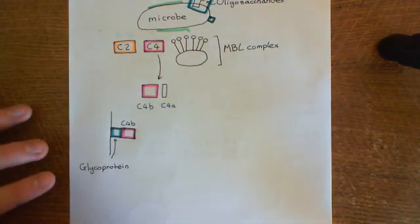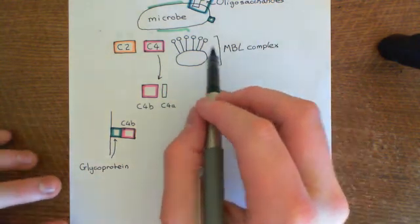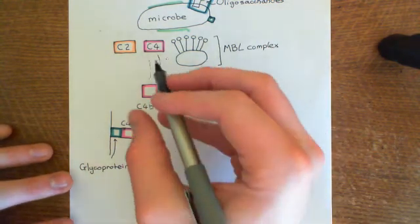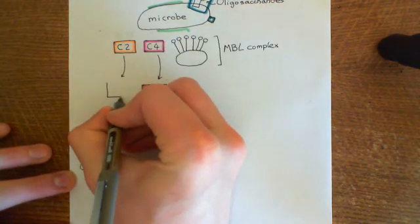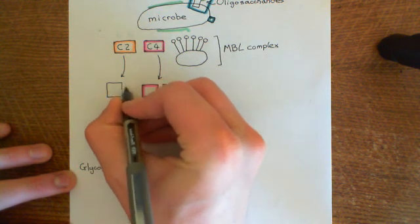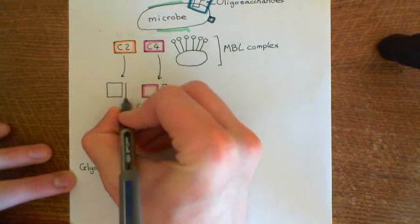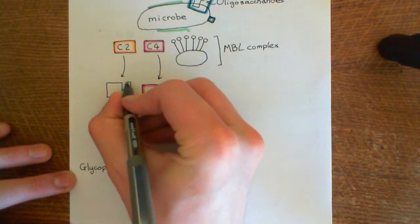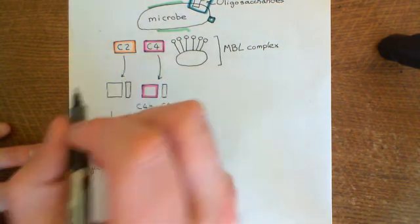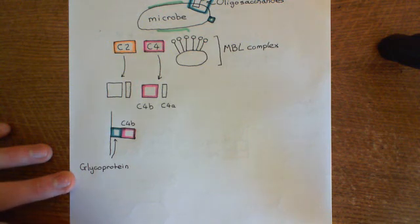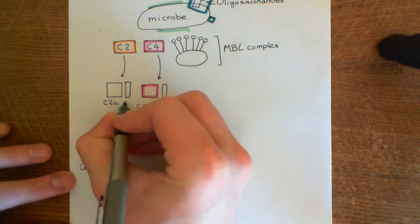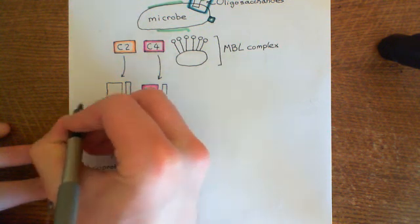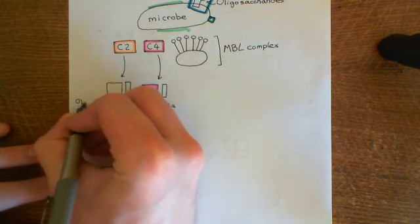Now the mannose-binding lectin complex didn't just break down C4 — it also broke down C2. Again it breaks it down into a big fragment and a small fragment. And here's where I have to tell you something horrible: there is a horrible piece of nomenclature here. The old names — the names used 20 or 30 years ago — were that the big fragment was called C2A and the small fragment was called C2B.